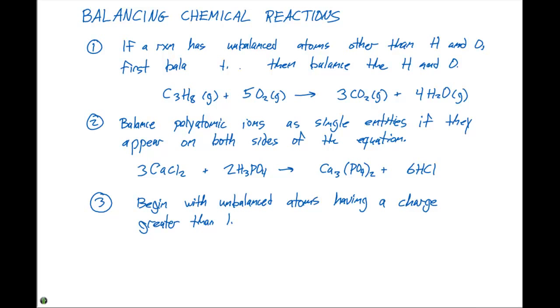So for example, if we have K2S plus AlCl3 giving Al2S3 plus KCl. The first thing we're gonna look into balancing is the one with the largest charge, which in this case would be aluminum.